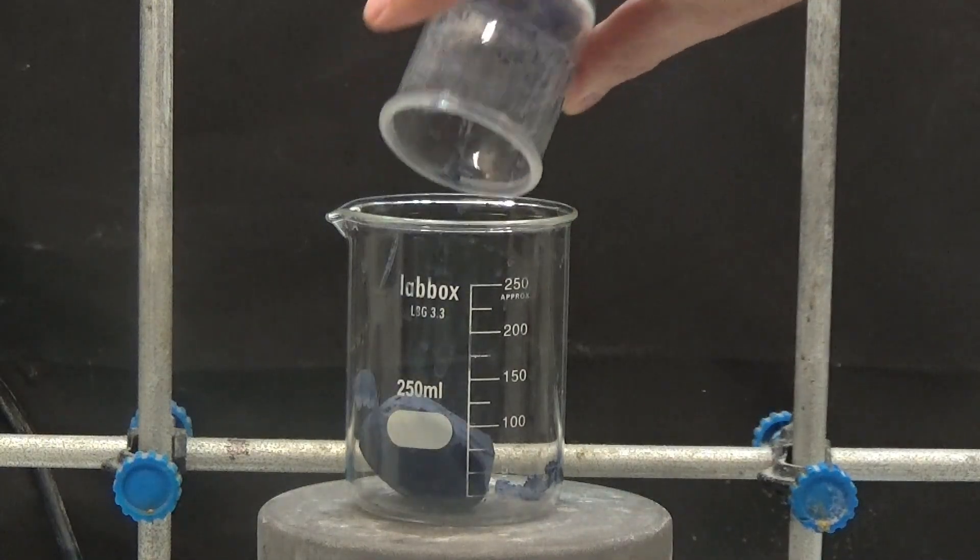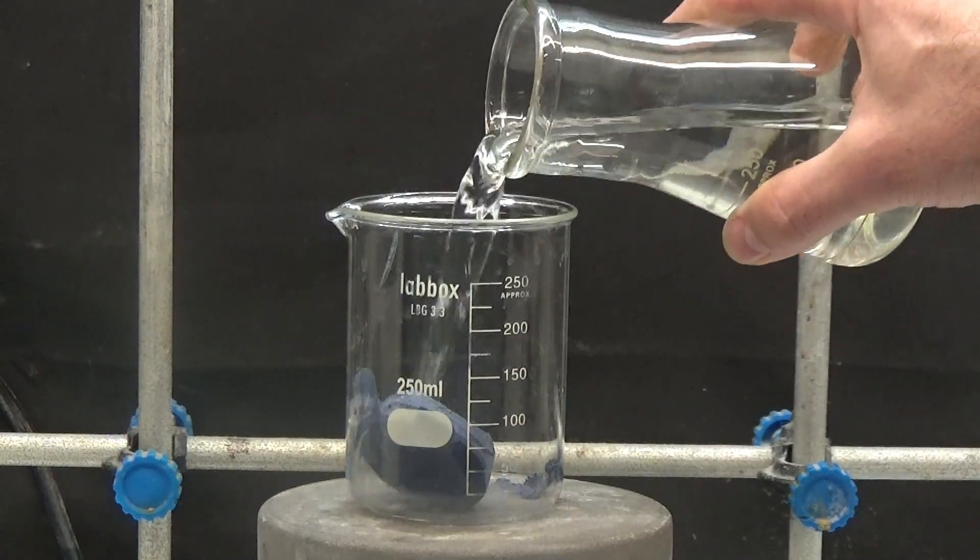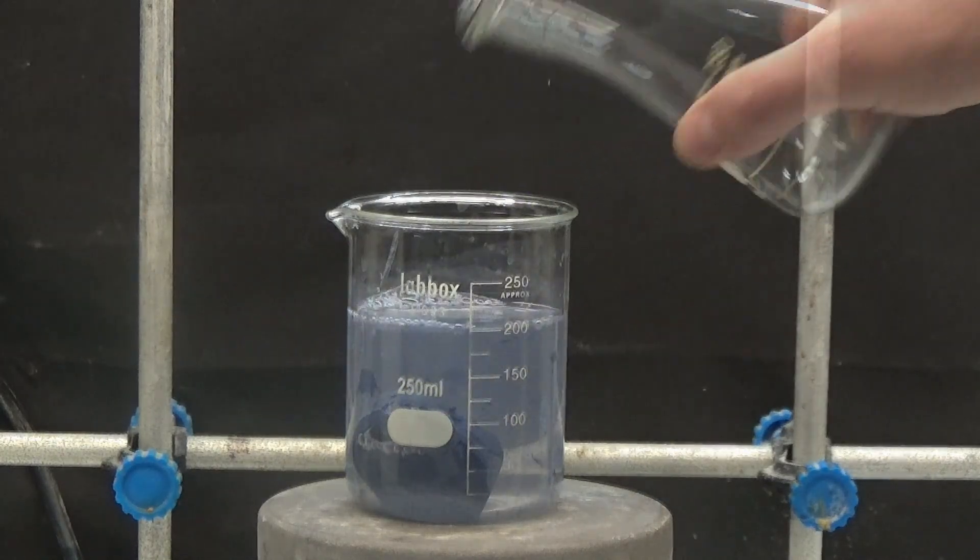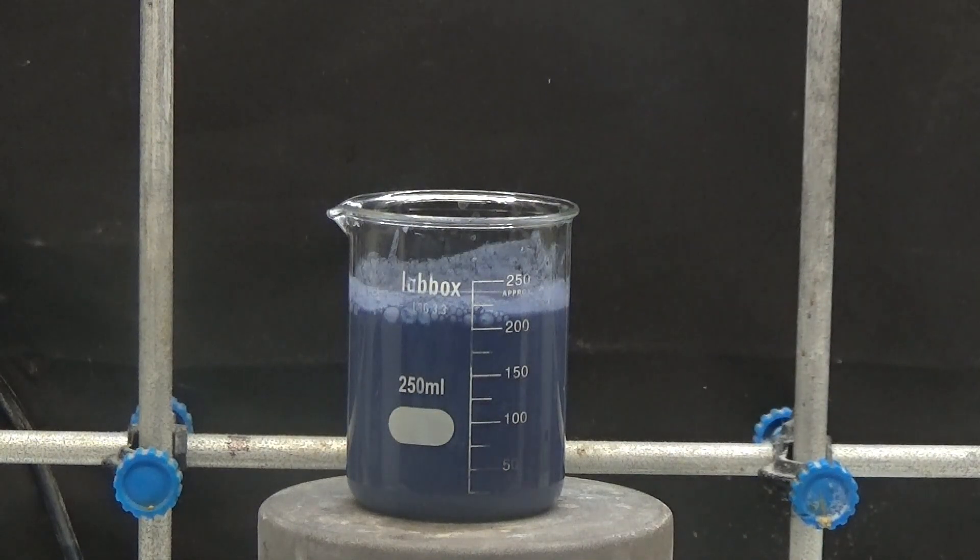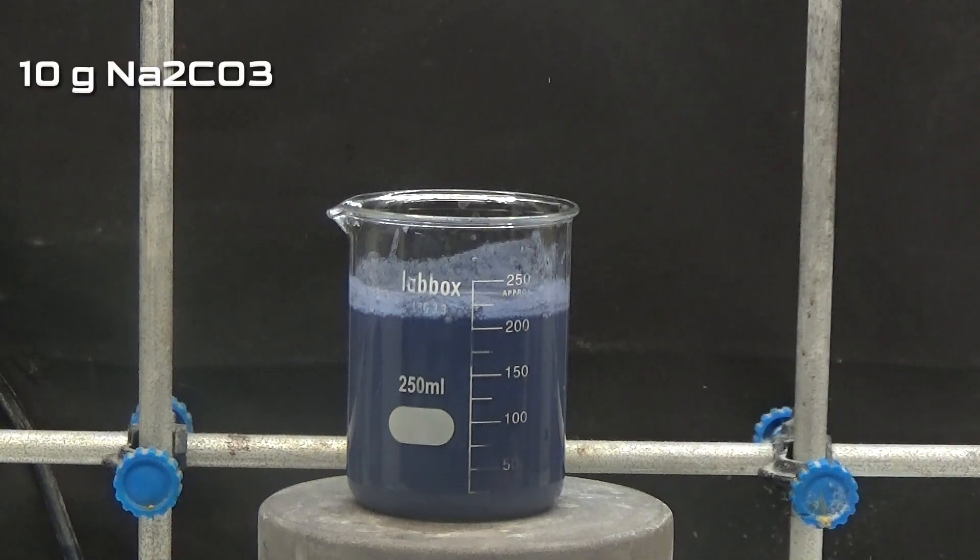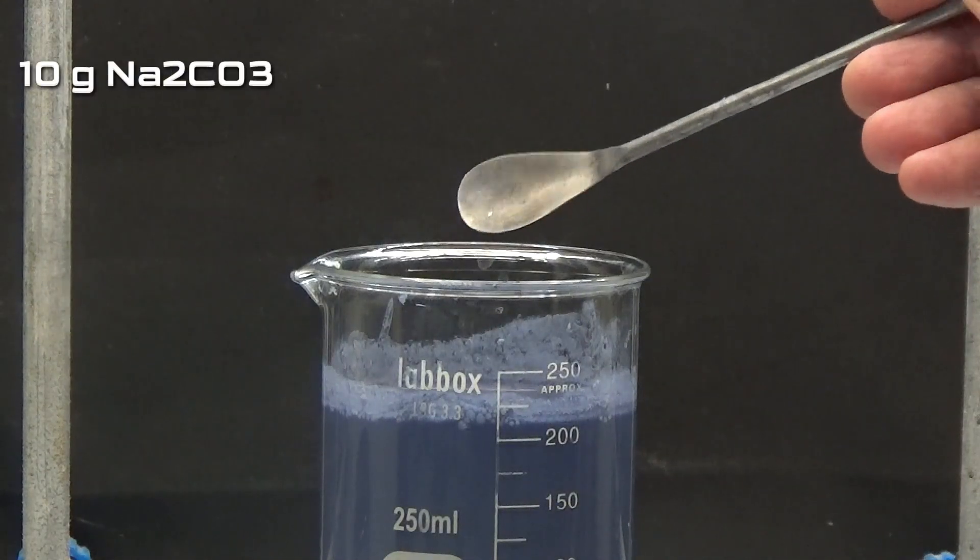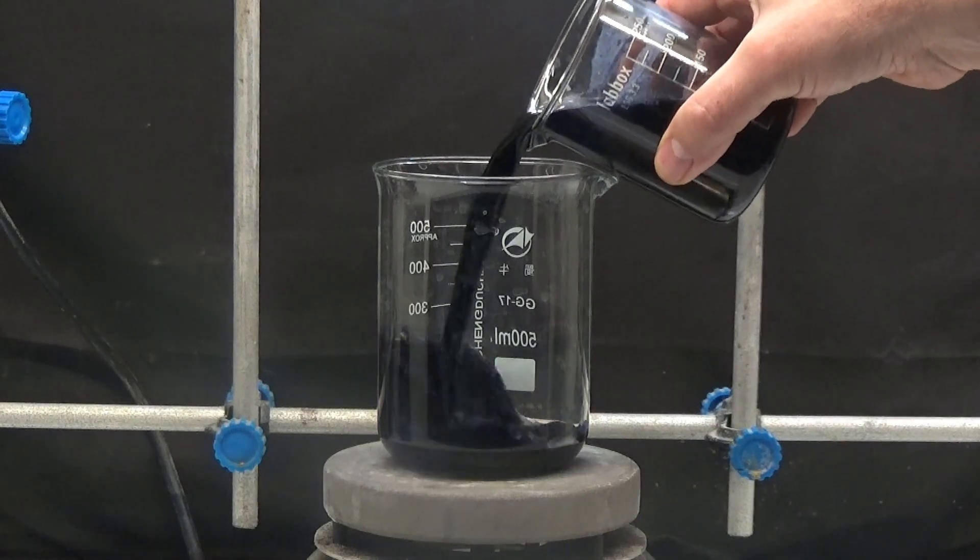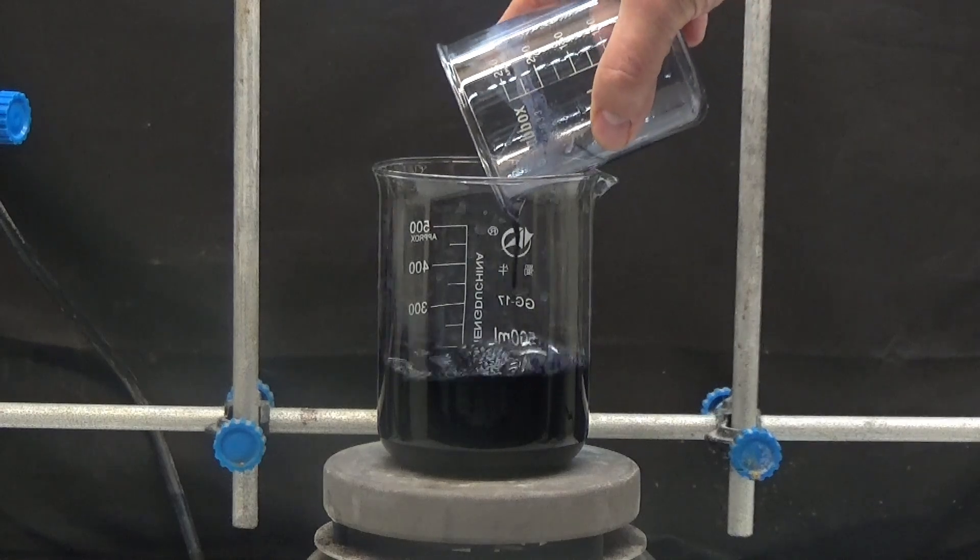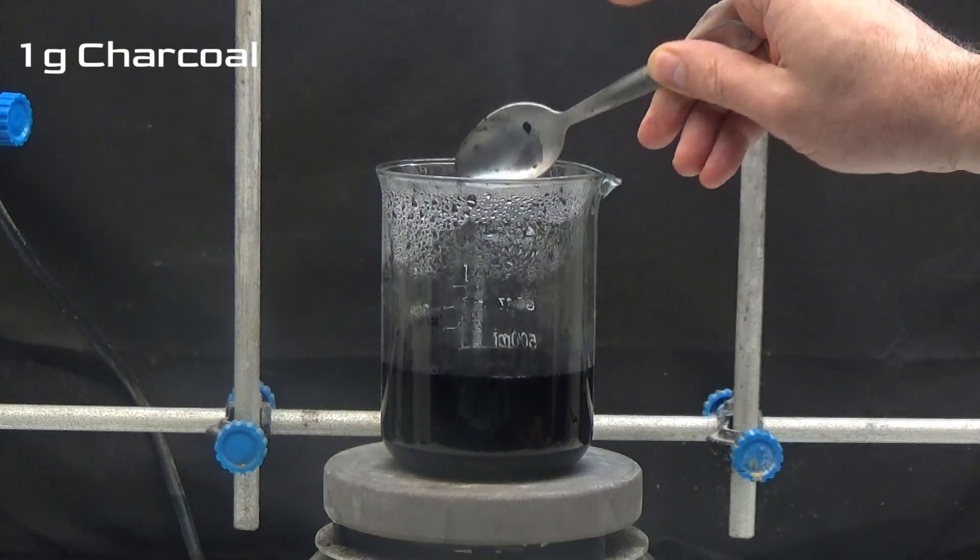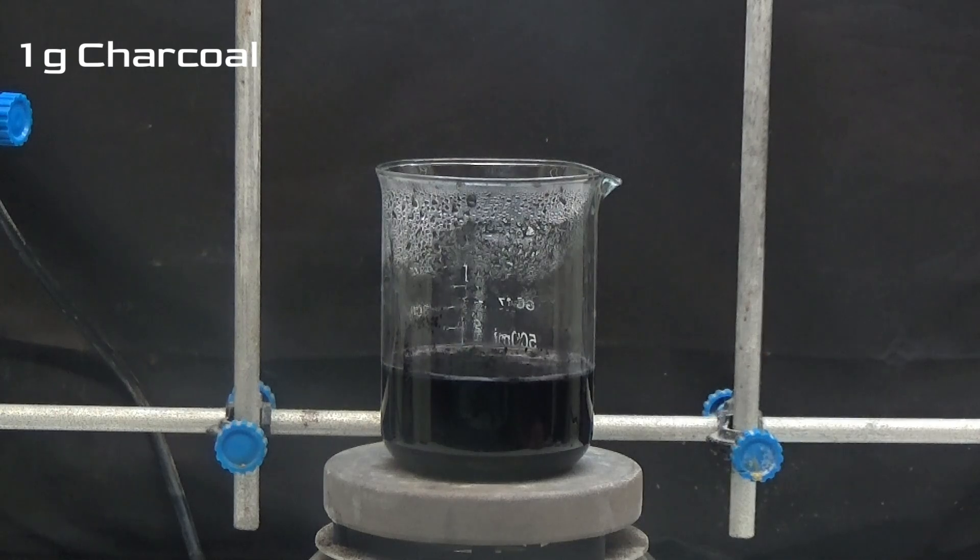The wet cake from the funnel is put in a 250 milliliters beaker and water is added up to a volume of 200 milliliters. We heat with agitation and slowly add 10 grams of anhydrous sodium carbonate during a time of 5 minutes. Once dissolved, the precipitate is put in a glass of 500 milliliters and we add 1 gram of charcoal. We boil for 10 minutes.